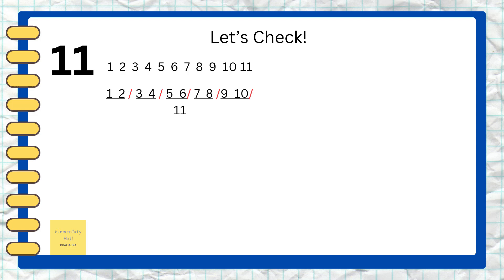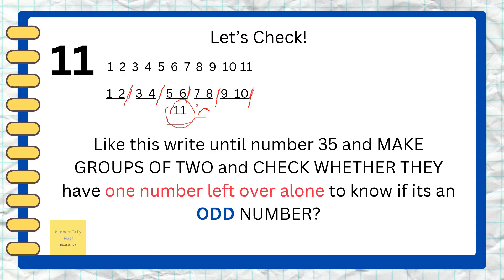Let's check number 11. Write up to number 11 and mark them in groups of two: 1, 2, 3, 4, 5, 6, 7, 8, 9, 10, and 11. Kids, can you see number 11 is left all alone? So number 11 is an odd number! Write up to number 35, make groups of two, and check whether they have one number left over alone to know if it's an odd number.